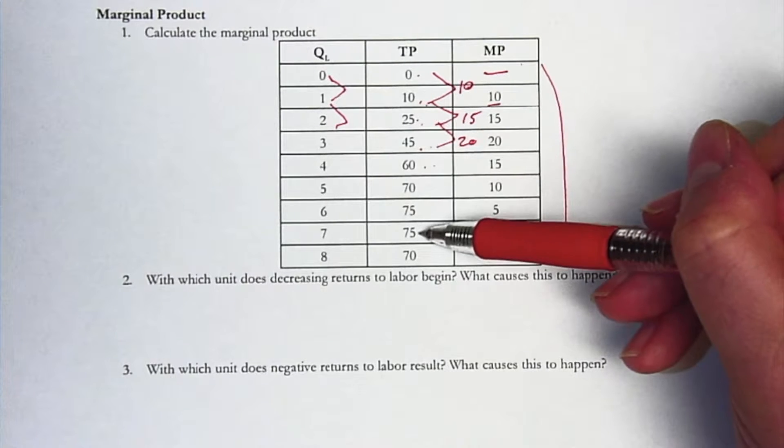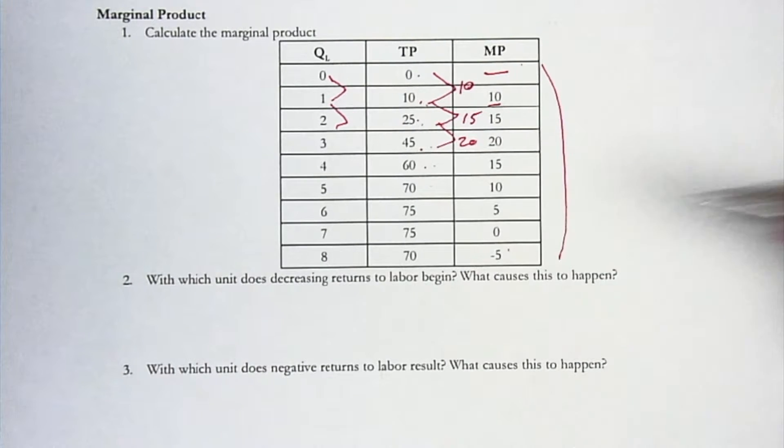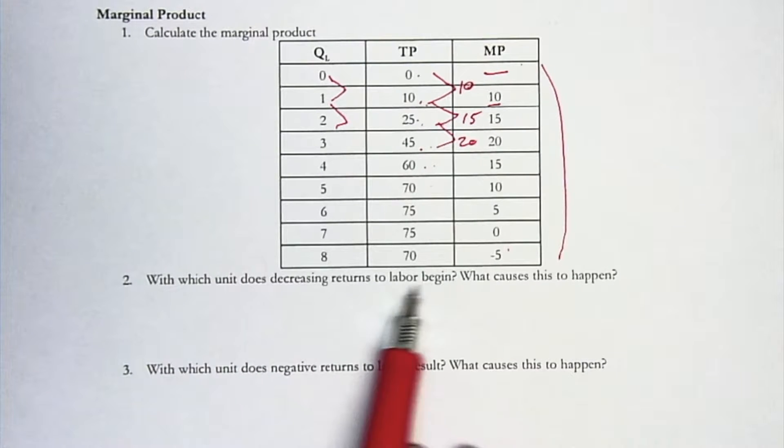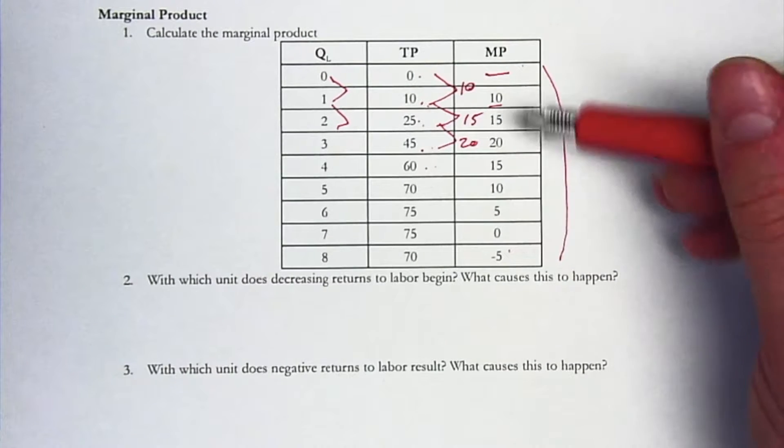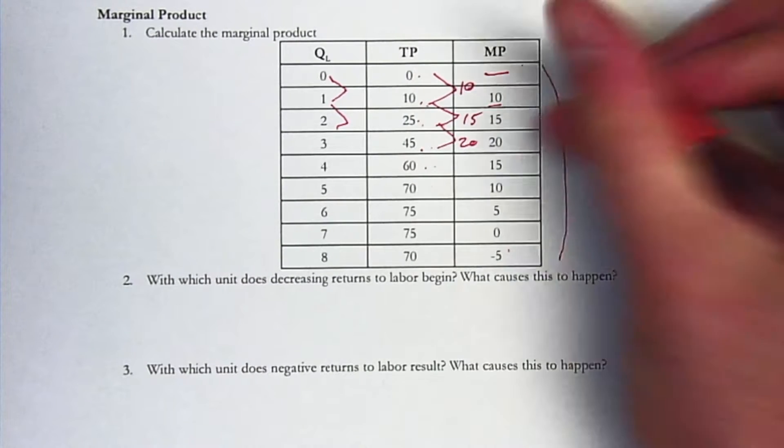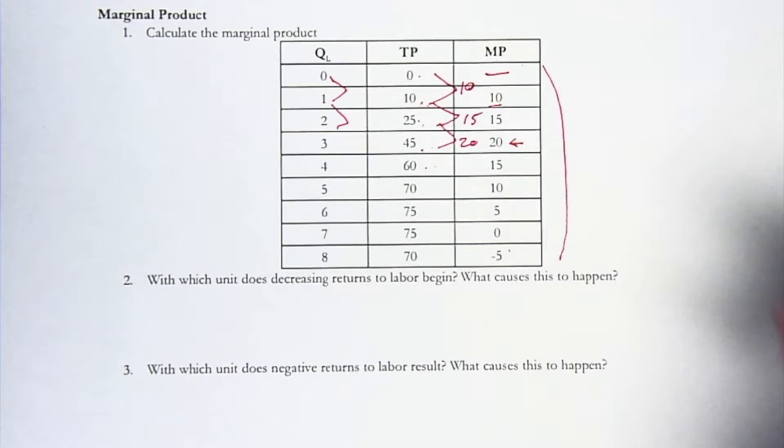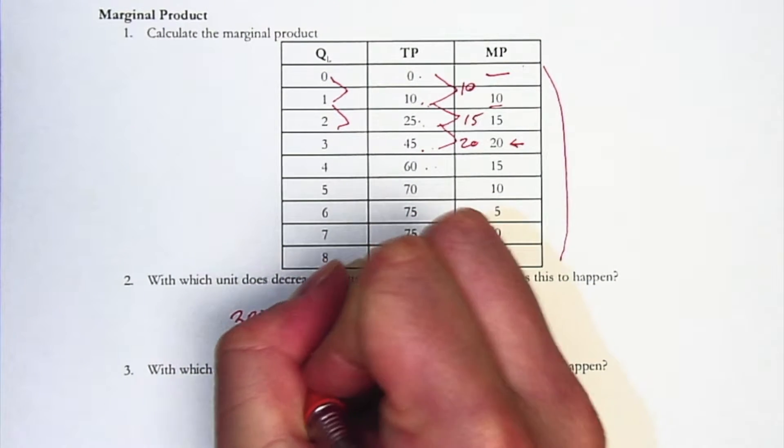So the marginal product of that seventh worker is 0, and then negative 5. And then with which unit does decreasing returns to labor begin? What causes that to happen? So where does the MP start to decrease? And that would be actually with this unit, with the third unit.